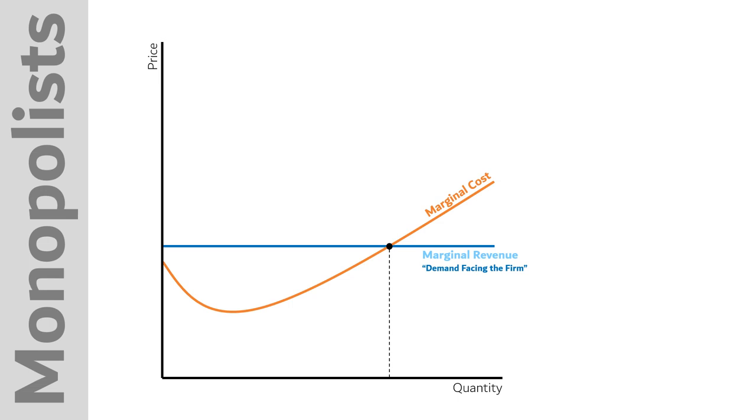But that isn't the case for the monopolist. Since they're the sole producer of the good, the quantity they choose will be the whole market supply. And so they do not face a perfectly elastic demand curve. They face the actual demand curve. Nevertheless, this point where demand crosses marginal cost would still be the optimal outcome. Here everyone who's willing to pay more than the cost of producing the unit they will consume would be able to get one.